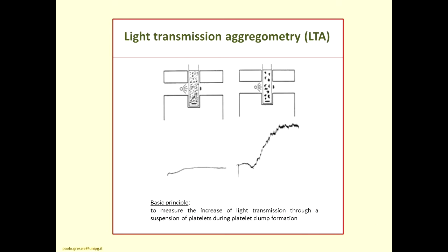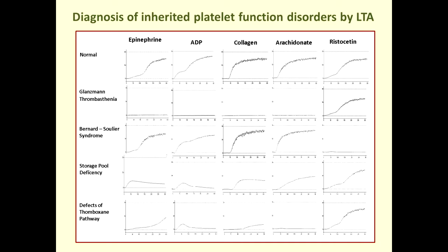The main test in the next group is light transmission aggregometry, described over 50 years ago by Gustav Born and John O'Brien independently. The basic principle is measuring the increase of light transmission through a platelet suspension during platelet clump formation. The test has several advantages because the readout is more complex and informative than the previous tests: you may use different agonists and different concentrations of each, and interpret results based on the shape of the platelet aggregation curves.